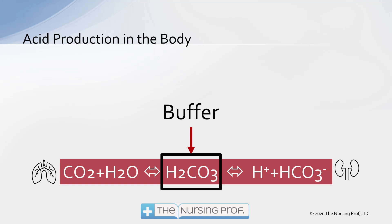Let's say, for example, your patient has got a renal problem and they can't get rid of some of those hydrogen ions. Well, we can go through the buffer — through carbonic acid — to get over to the other side of the equation, and the patient can pick up their respiratory rate and blow off some CO2.